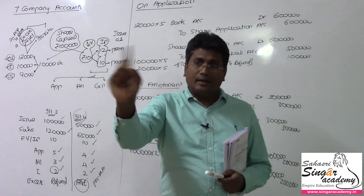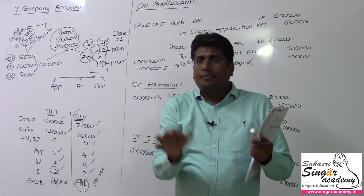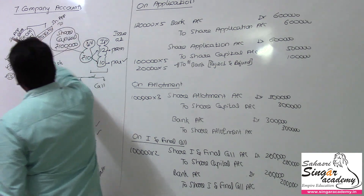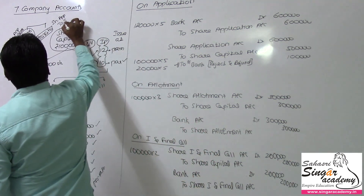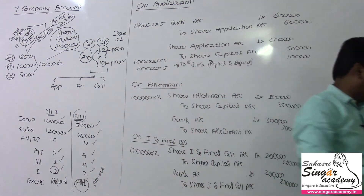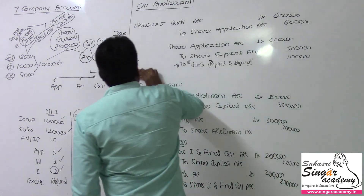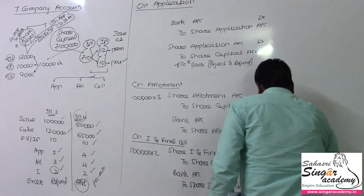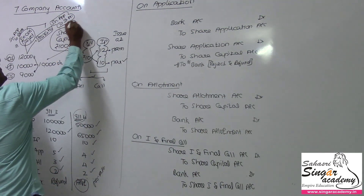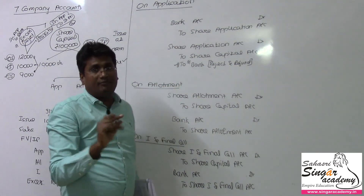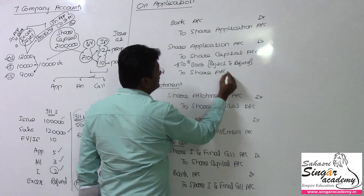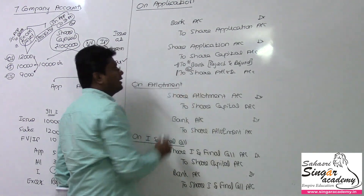You will get a refund. In the case of pro-rata, we are not going to fully refund — excess application money will be adjusted. Share application account to bank account for refund. And for the allotment adjustment: share application account to share allotment account — this can be passed as a single entry or a combined entry.